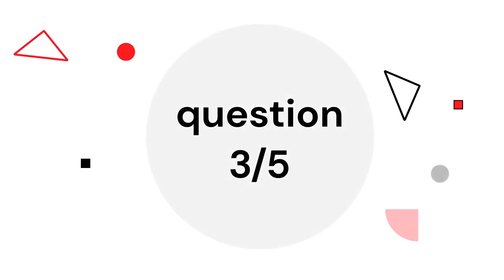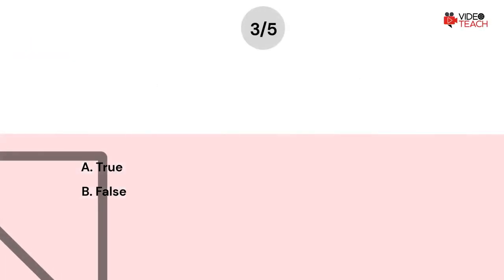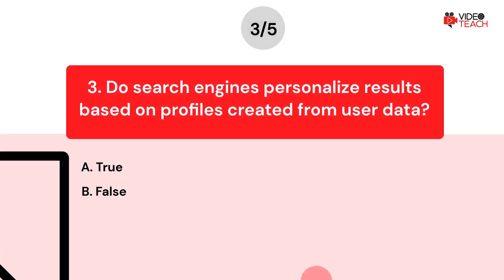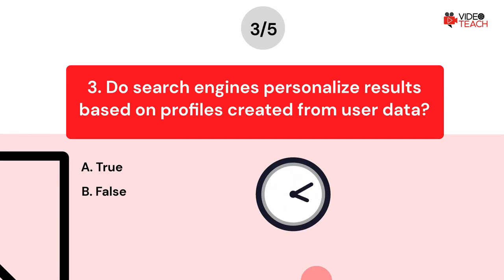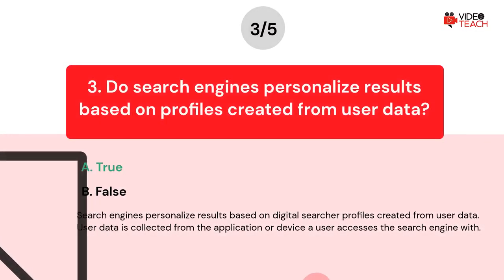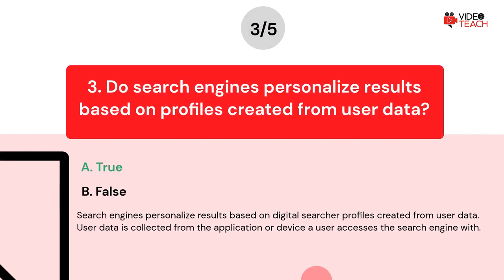Question number three. Do search engines personalize results based on profiles created from user data? Option A: They do. Option B: They don't. Now you have about 15 seconds to think about your answer. The correct answer is A. Search engines personalize results based on digital searcher profiles created from user data. User data is collected from the application or device a user accesses the search engine with.